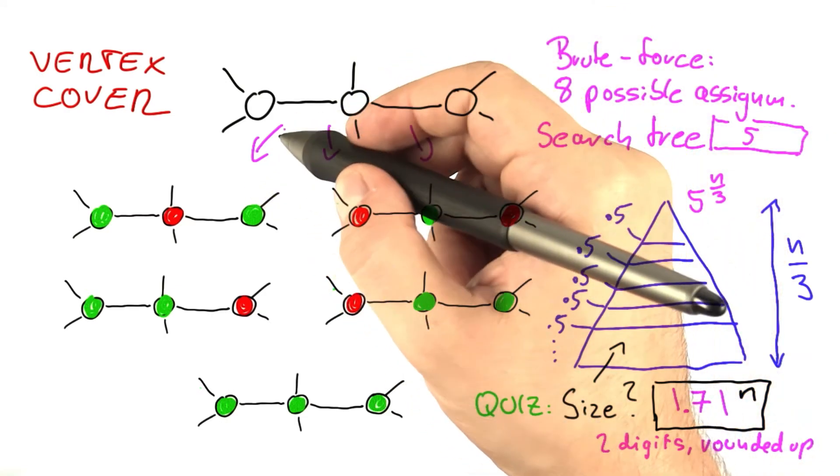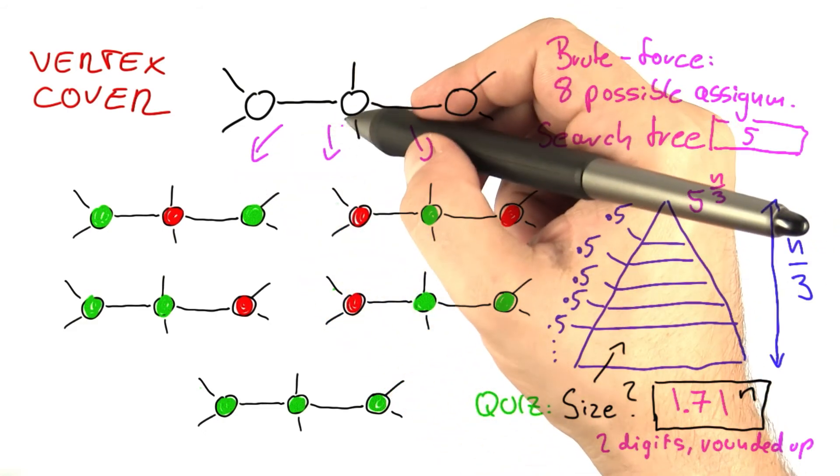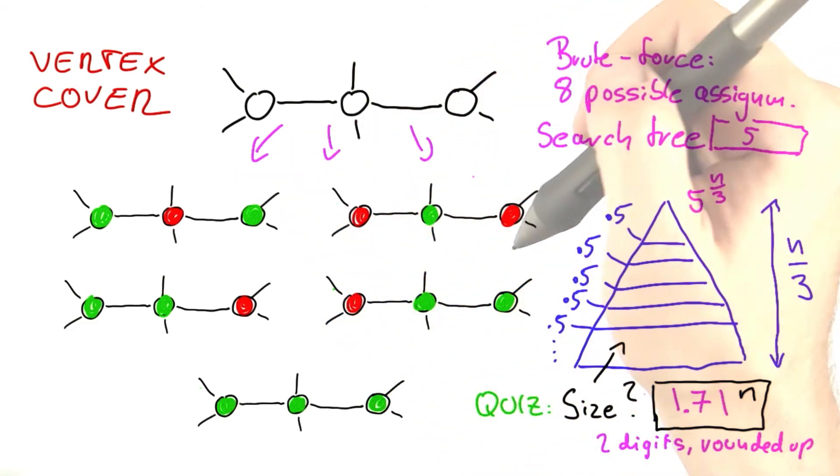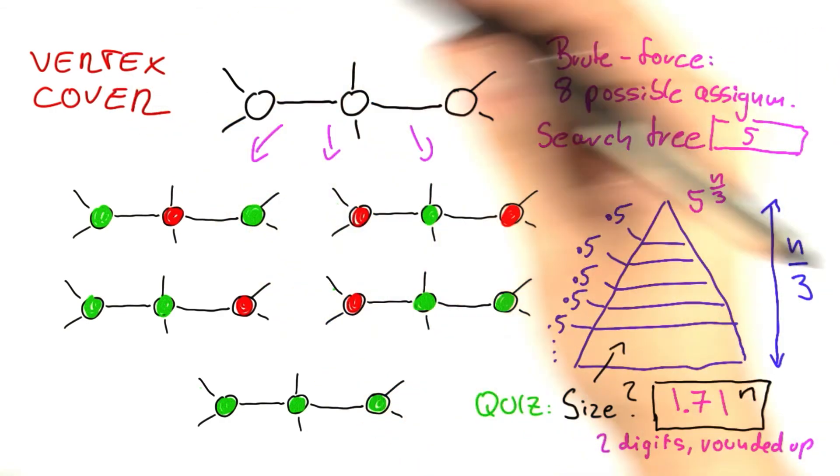So you could have a search tree that, for example, in one possibility only assigns two vertices a value. In another possibility, it assigns five vertices a value, and so on. And through this refined analysis, you can get much better results, as we'll soon see for VertexCover.